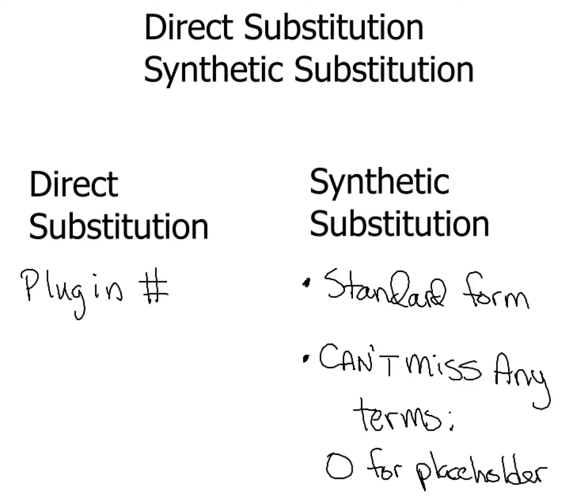Synthetic substitution, a couple things about that. One, your polynomial must be written in standard form. So that means from highest degree to lowest degree. Second thing, you can't miss any of the terms. Sometimes you may have to add zero in as a placeholder and we'll take a look at that shortly.